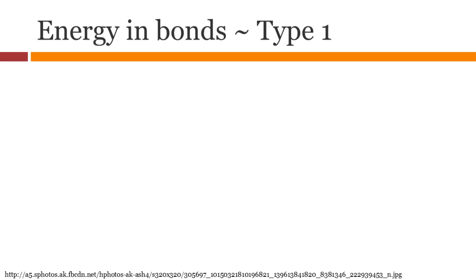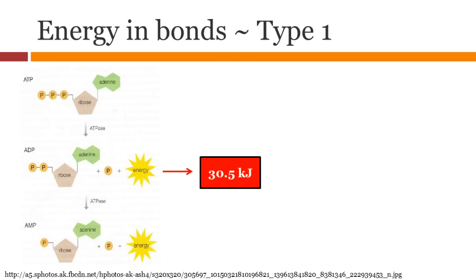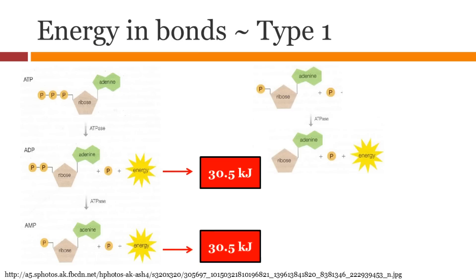There are two ways you can use ATP. Type 1 is going from ATP to ADP, then ADP to AMP. Each of these bonds release 30.5 kJ. Breaking the last phosphoryl releases only 14 kJ.